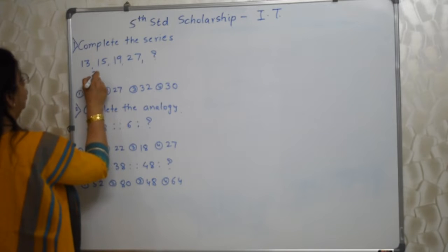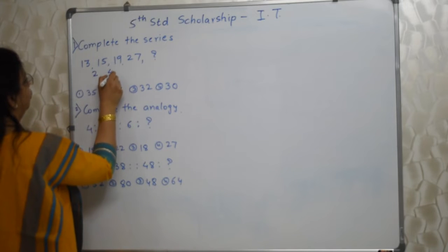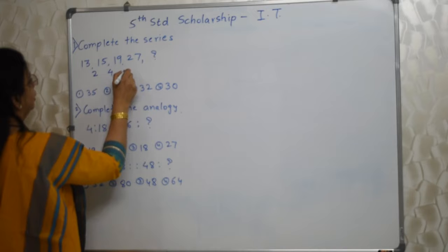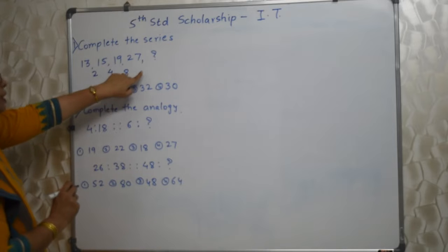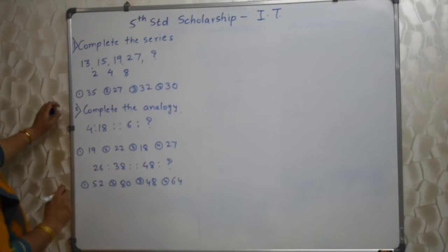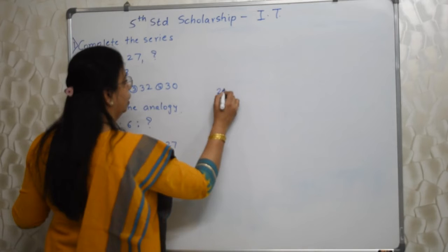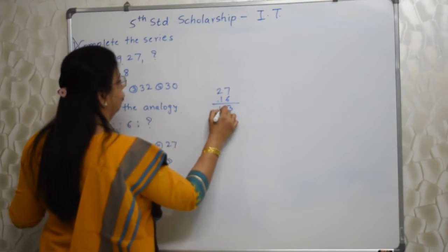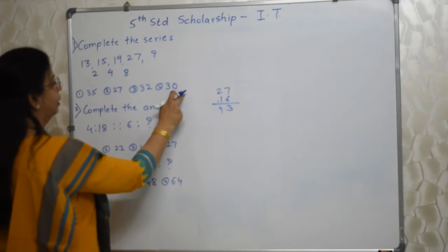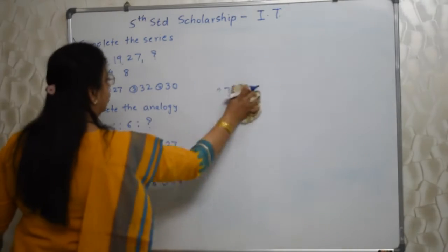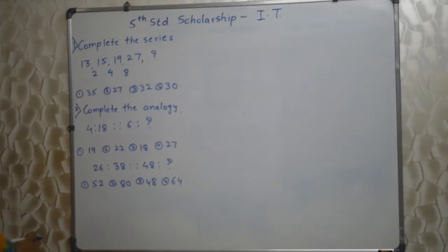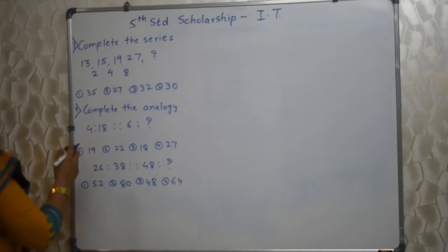What is the difference? There is 2 here, then 4, then 8. Looking at these differences, anybody may think it is 2, then 4, then 8, then 16. So 27 plus 16 is 43. But 43 is not one of the options. So apply some other logic — this is not the logic which they want us to apply. They are expecting something else.